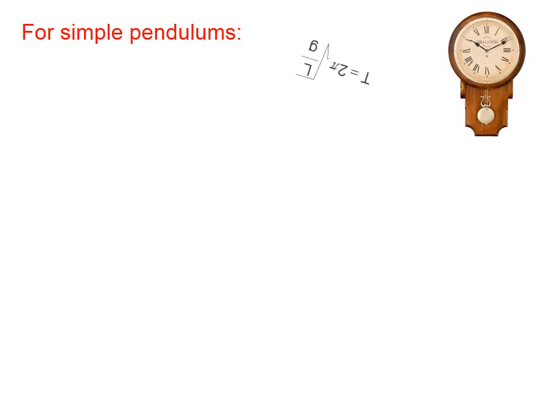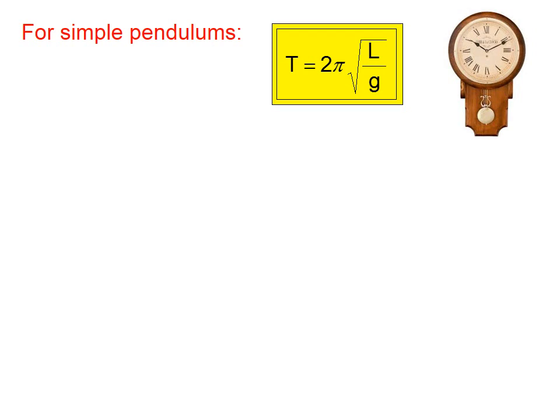For simple pendulums, the period of motion is given by this equation, 2π times the square root of L over g. L is the length of the pendulum, g is the acceleration due to gravity, which on Earth is going to be about 9.81. If we were on the Moon, it would be about 1.6.